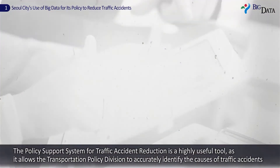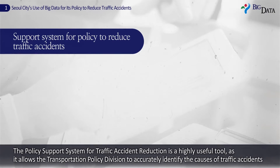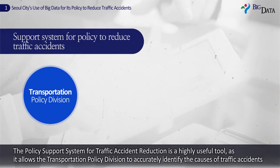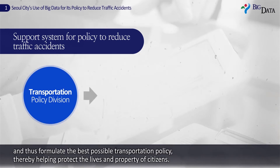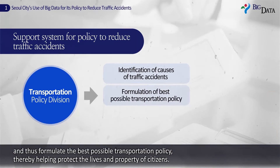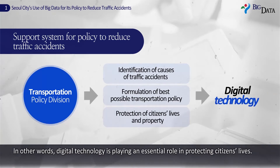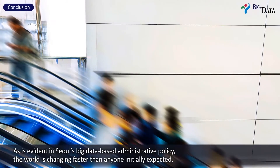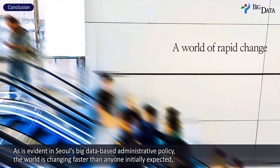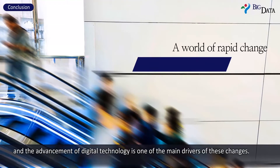The Policy Support System for Traffic Accident Reduction is a highly useful tool, as it allows the transportation policy division to accurately identify the causes of traffic accidents and thus formulate the best possible transportation policy, thereby helping protect the lives and property of citizens. In other words, digital technology is playing an essential role in protecting citizens' lives, as is evident in Seoul's big data-based administrative policy.